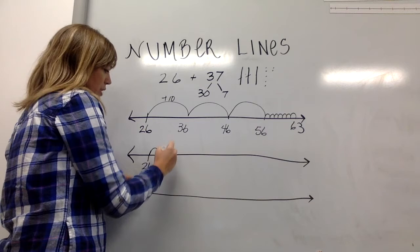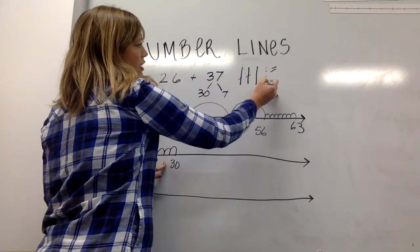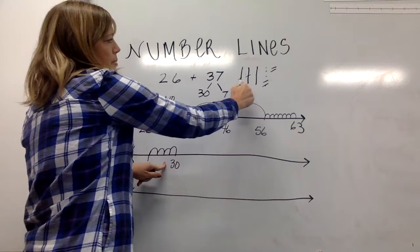26, 27, 28, 29, 30. How many jumps did it take to get to 30? It took four. I'm going to cross out four of these ones that I know I've already jumped by.